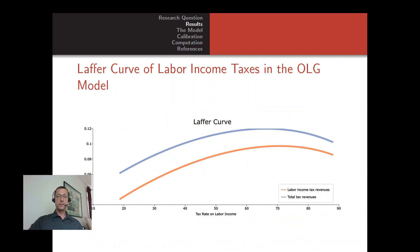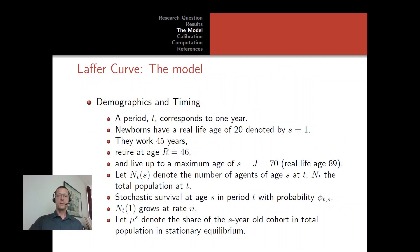The Laffer curve for labor income taxation in the Ramsey model shows a steeper line compared to our OLG model. What is also interesting is what happens to the Laffer curve during demographic aging. Over the next 50 to 100 years, the US population will become much older, and as a consequence our Laffer curves will become flatter, with smaller potential tax revenues.